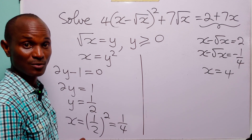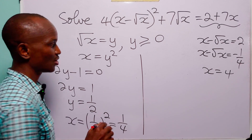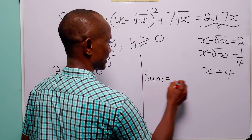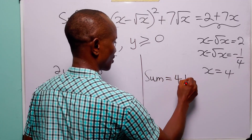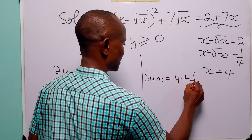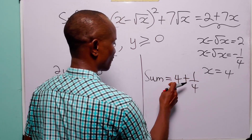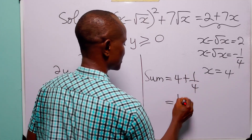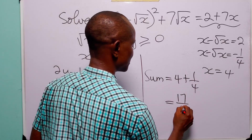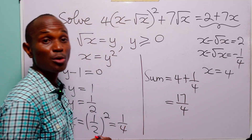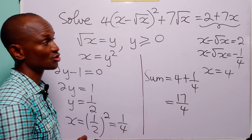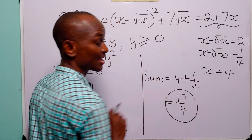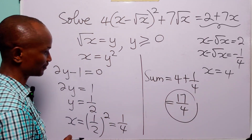And to answer the question and find their sum, we have that the sum is equal to 4 plus 1 over 4. 4 times 4 is 16 plus 1, which is 17 over 4. So, the sum of the roots of this equation is 17 over 4.